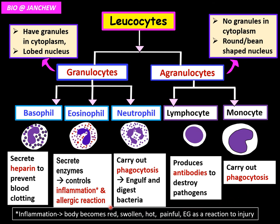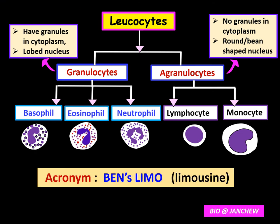Here is an easy acronym to remember the five types of leukocytes: BENLMO. B for basophil, E for eosinophil, N for neutrophil — these three are granulocytes. L for lymphocyte, MO for monocyte — these two are agranulocytes. LIMO is short for limousine, a luxury vehicle that is usually chauffeur driven.